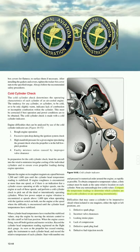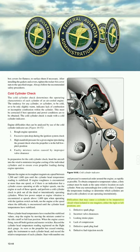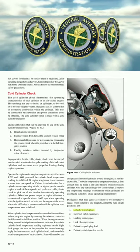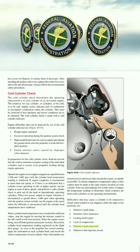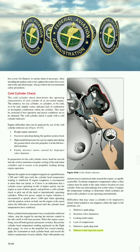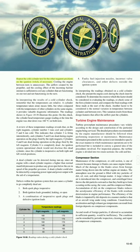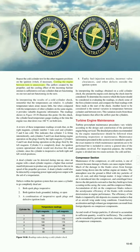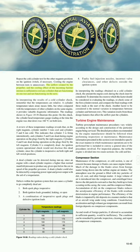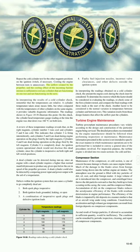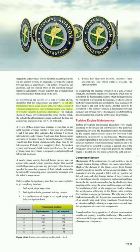Note any outstandingly low or cold values and compare temperature readings to determine which cylinders are dead or operating intermittently. Difficulties that may cause a cylinder to be inoperative when isolated to one magneto include: defective spark plugs, incorrect valve clearances, leaking intake pipes, lack of compression, defective spark plug lead, and defective fuel injection nozzle. Repeat the cold cylinder test for the other magneto positions; cooling the engine between tests is unnecessary, as the airflow from the propeller and cooling effect of the incoming fuel/air mixture is sufficient.